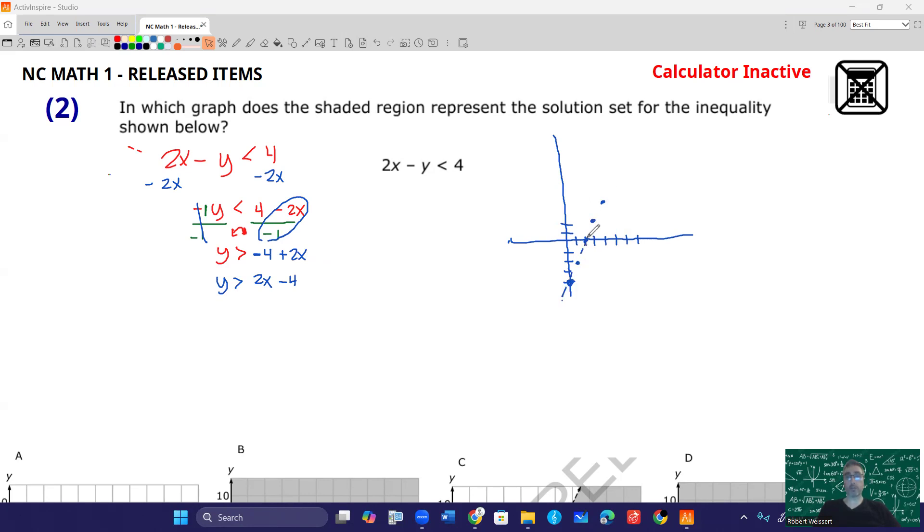This is going to be a dashed line. Why dashed? Well, because it's a greater than. Greater than or less than is going to be dashed, whereas greater than or equal to or less than or equal to would be solid. And dashed means it does not contain, whereas solid means it contains.